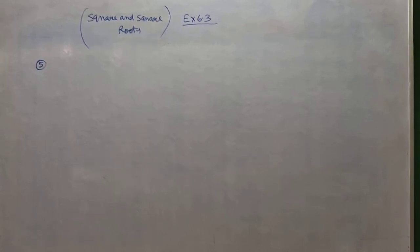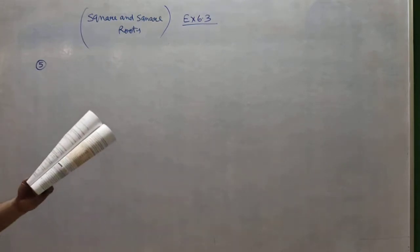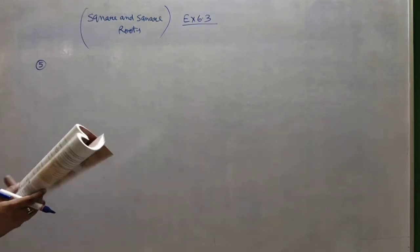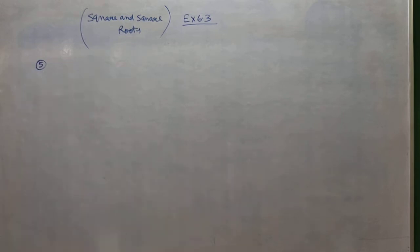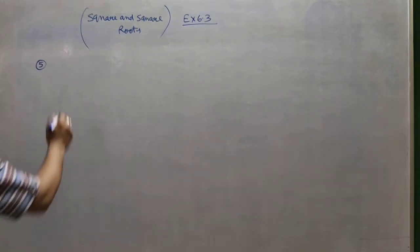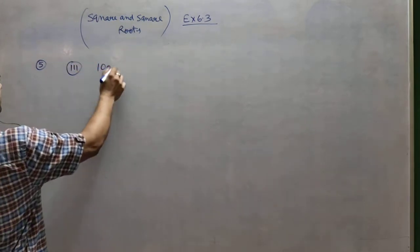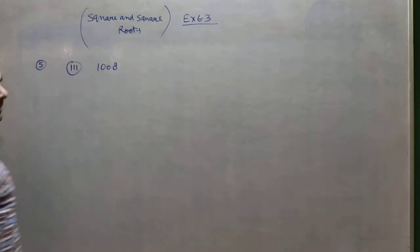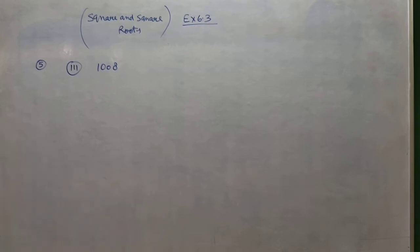Hello students. In this video we will do the remaining sums of Exercise 6.3: for each of the following numbers, find the smallest whole number by which it should be multiplied. We have done one sum in the last video, so here I am taking 1008. First of all we have to do prime factors.